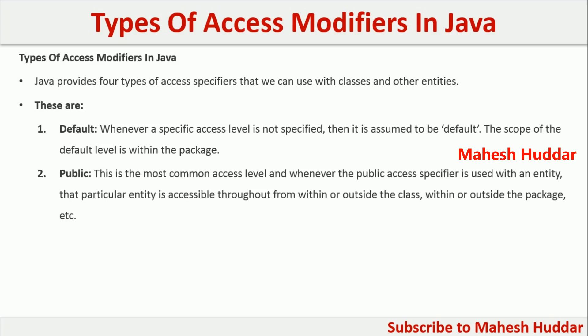The second one is the public access modifier. This is the most common access level, and whenever we use the public access specifier with any entity, it is accessible within or outside the class, within or outside the package — that is, within a project we can access this particular entity everywhere.